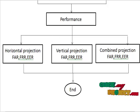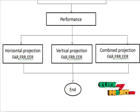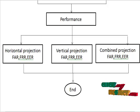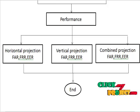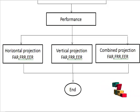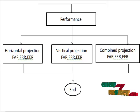The performance features are extracted in horizontal projection, vertical projection, and combination of both projections to recognize the signature. The combined projection-based signature verification system gives better and improved results over horizontal and vertical projection based features. The values of FAR, FRR, and EER for the combination of horizontal and vertical projection should be less compared to horizontal and vertical projection separately.